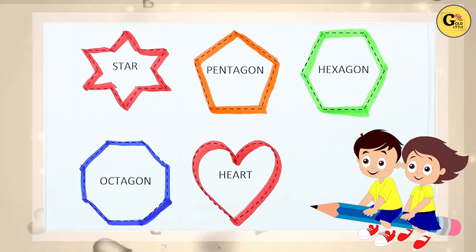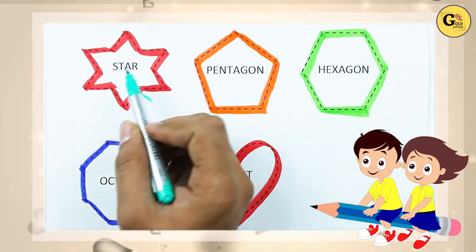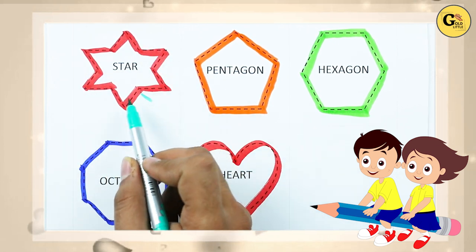Hello friends! Today we learn shapes: star, pentagon, hexagon, octagon, and heart. Which color is this? It's red color. Which shape is this?